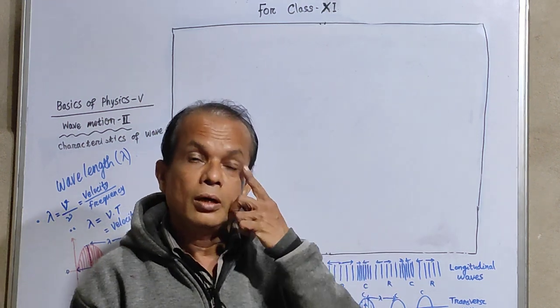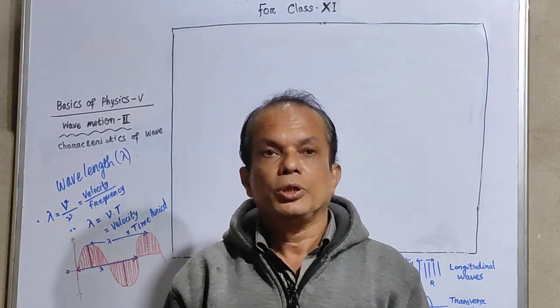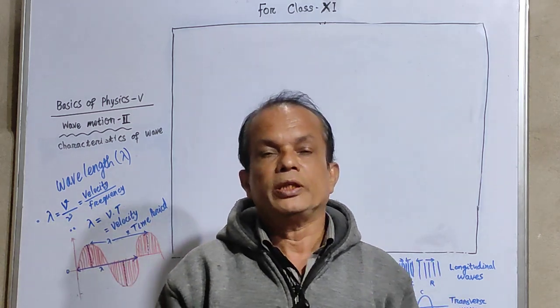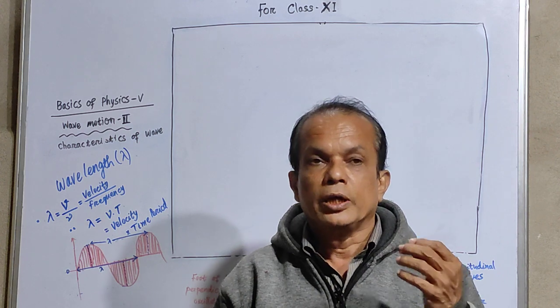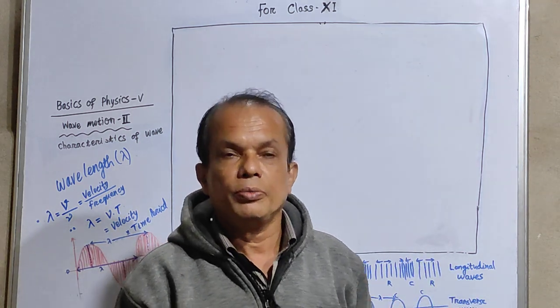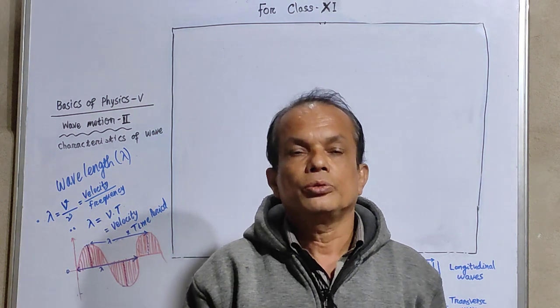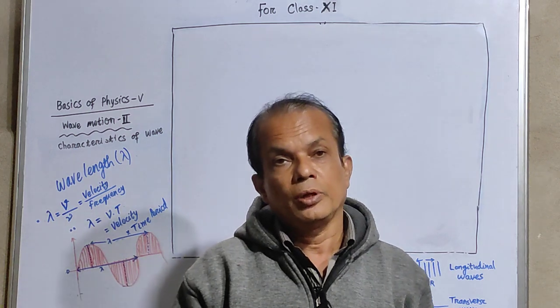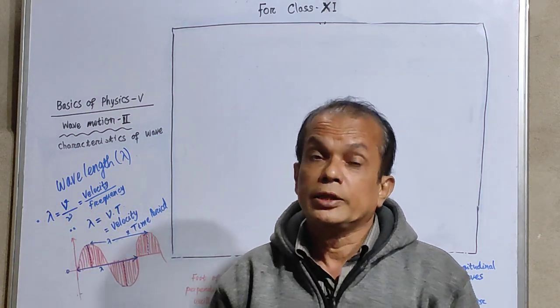Hello kids, let us start with the basics of physics in wave physics. The characteristics of wave - out of the five characteristics of wave, after amplitude, wavelength is of utmost importance. And what is wavelength? Let us start with an example.